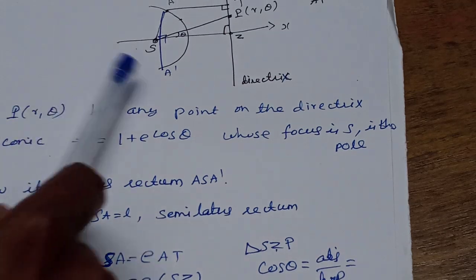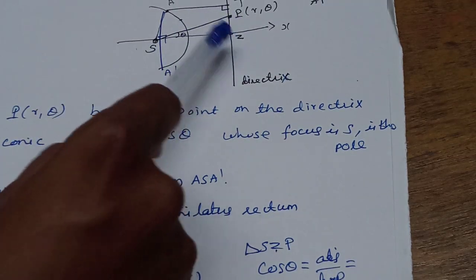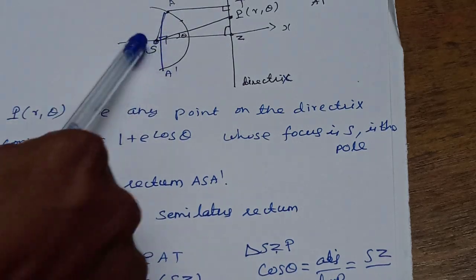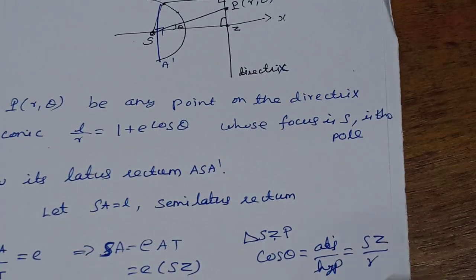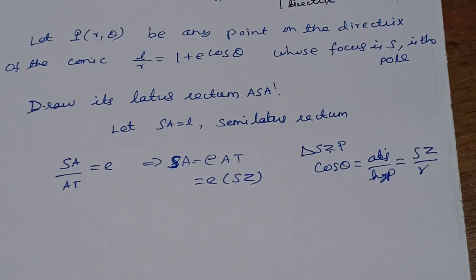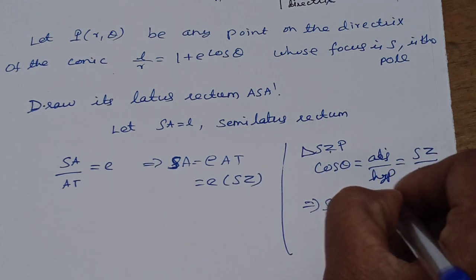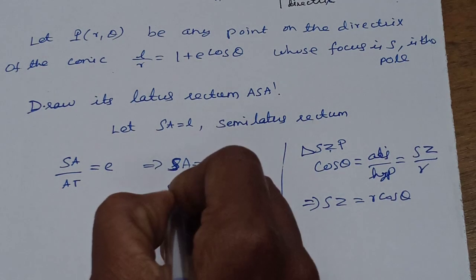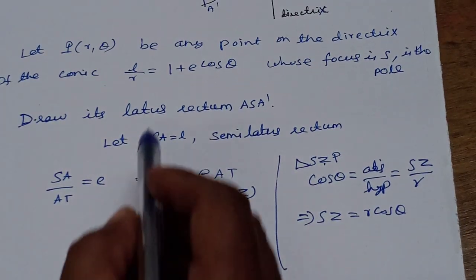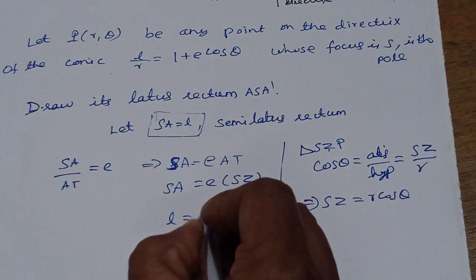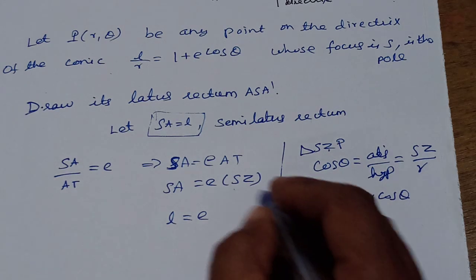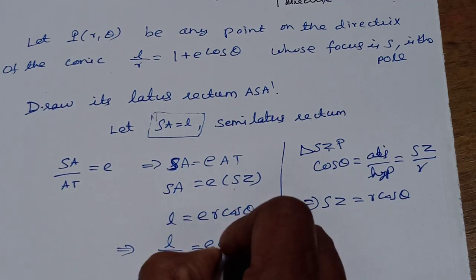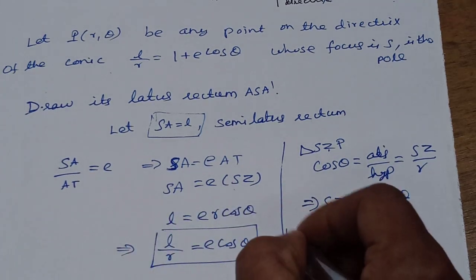From the diagram, we find the adjacent side. The theta gives the opposite and adjacent sides. SZ is the hypotenuse of the right triangle, opposite the 90-degree angle. SP has length R. This implies SZ equals R cos theta. Now replacing SZ with R cos theta, and since SZ equals L divided by E, we get L by E equals R cos theta. Dividing both sides by R: L by R equals E cos theta. This is the equation of the directrices.